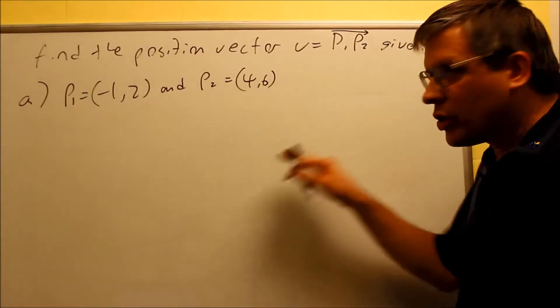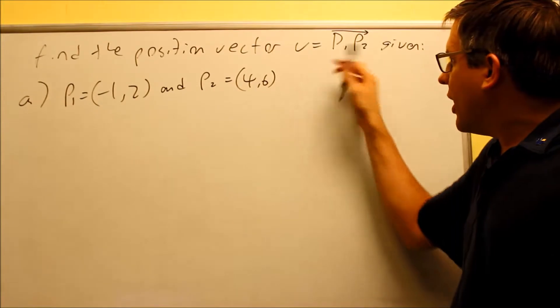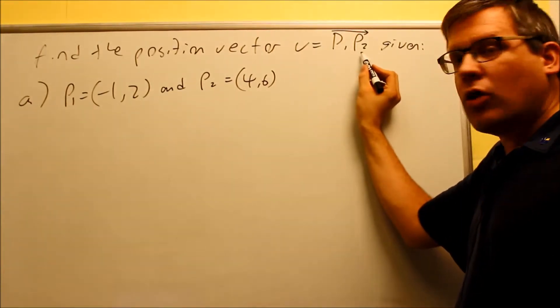Okay, for example, we're given our two points, P1 and P2. We want to find the vector that goes through P1, P2, with P1 as your starting point.